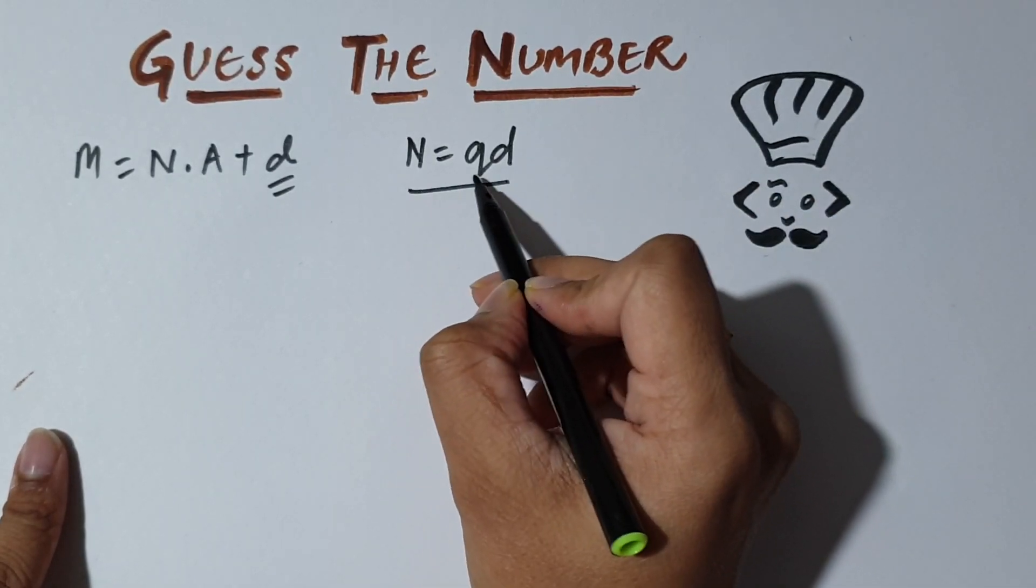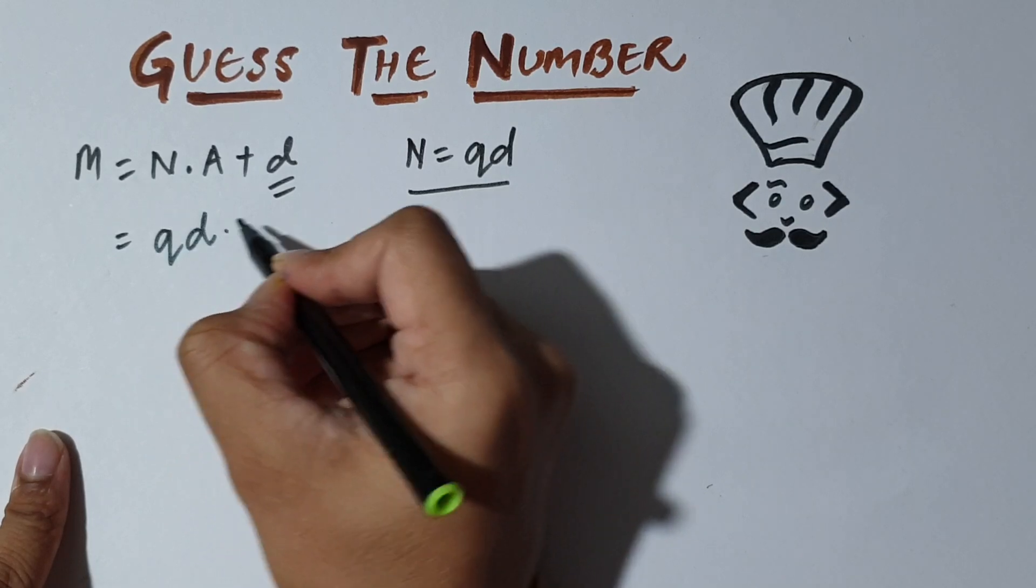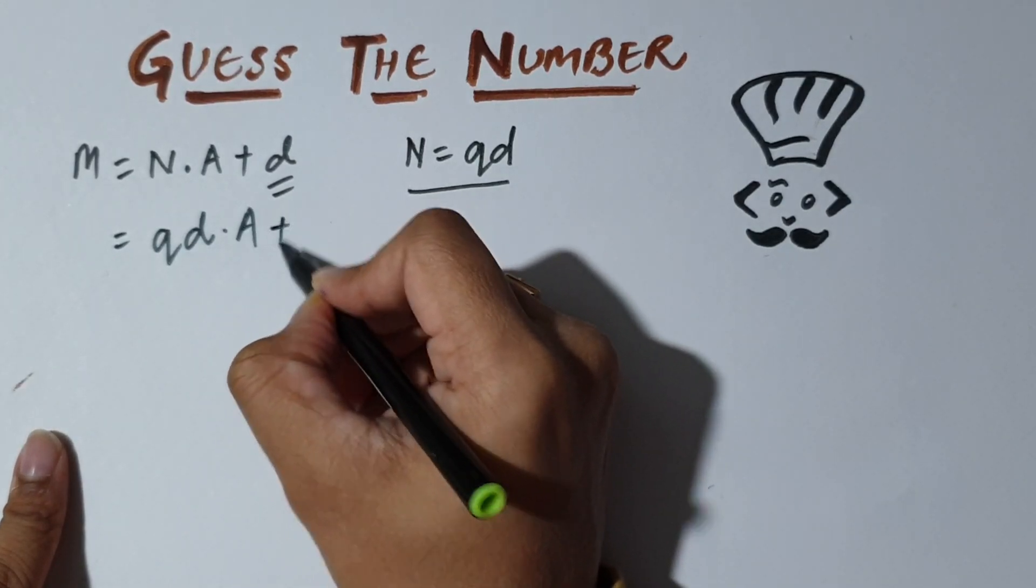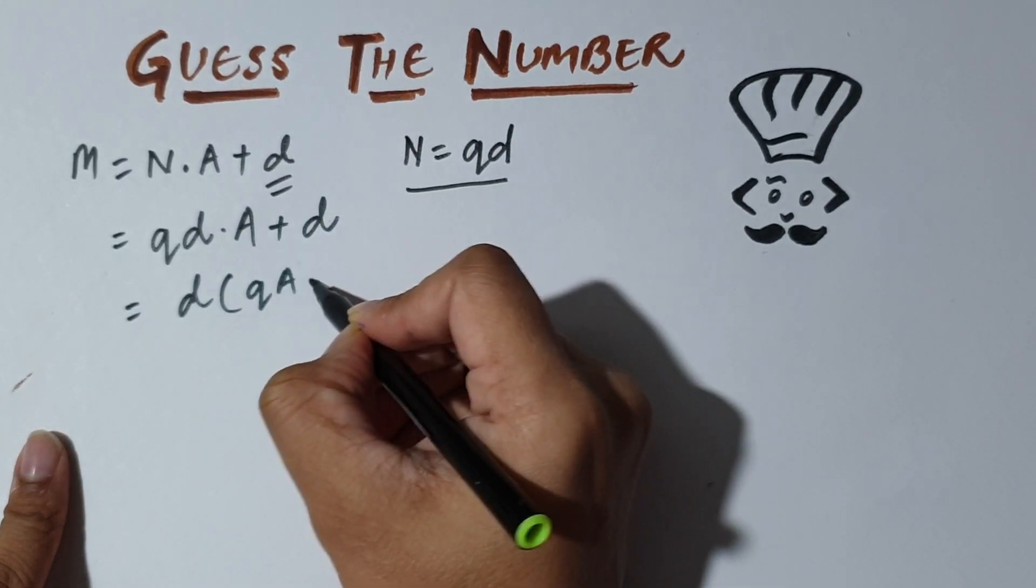So we can write M as Q into d into A plus d. Taking out d common will give us d times (QA plus 1).